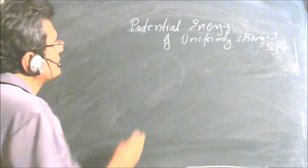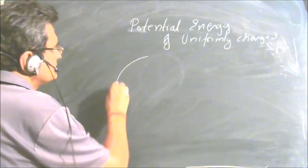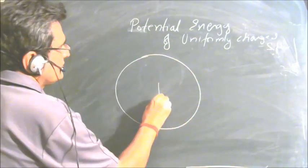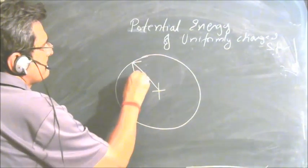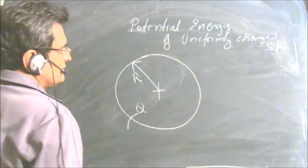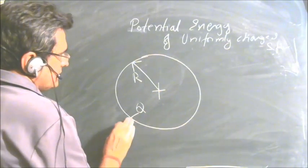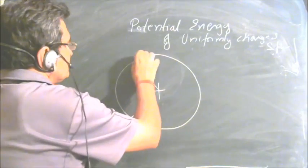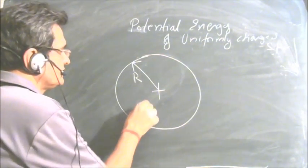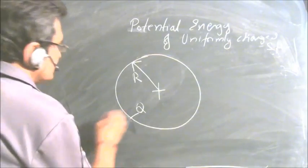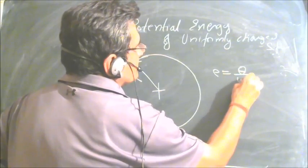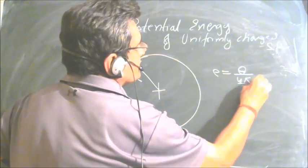We will find the potential energy of a uniformly charged sphere. Let this be a sphere of radius R and total charge Q. We have to find the potential energy of this sphere, which is uniformly charged with charge Q. Let us write the charge density: rho = Q / (4/3 · π · R³).